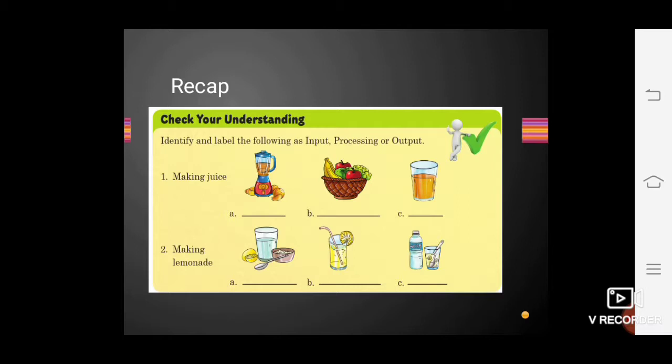Let's take the first example of making juice. For making juice, the first step is input. You have to collect fruits. Here is the picture of fruits in Option B, so in Option B you will write 'input.'